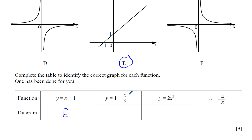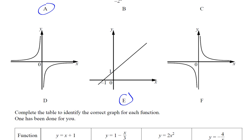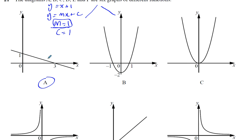For the second graph, y equals 1 minus x over 3. Well, there's only one other linear graph, so it must be A. But we can see also it's got a negative gradient, and the gradient is minus a third. This is the point (0, 1). This is the point (3, 0).